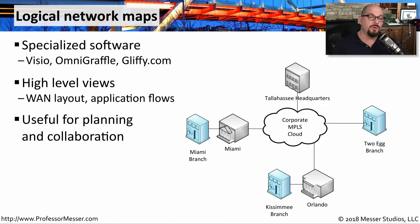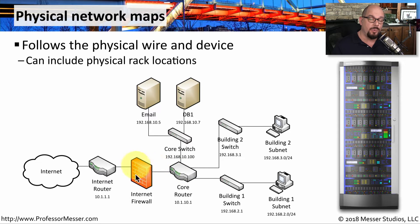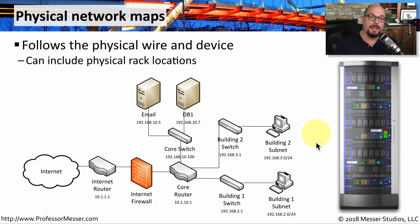If more detail is required, you can move from a logical network map to more of a physical layout. Physical network maps will show individual components inside of the network. They will identify specific interfaces on devices, may show IP addressing, and give you an idea of exactly where wires and cables may be running between different devices. Some physical network maps will show the physical layout of the rack in the data center, so you can show this rack diagram to a third party and they'll know exactly which component you're referencing.